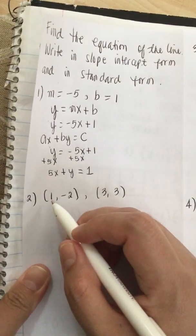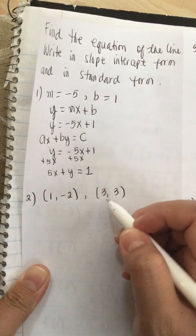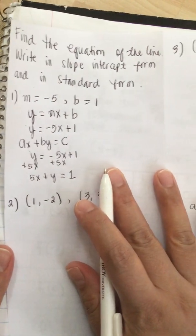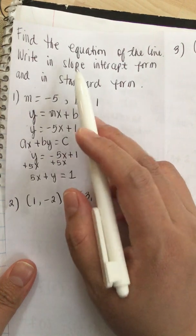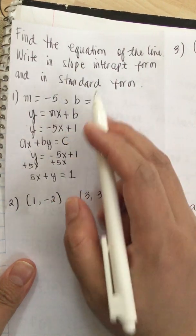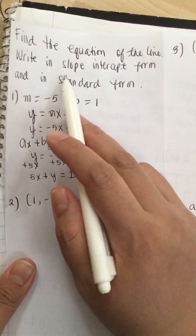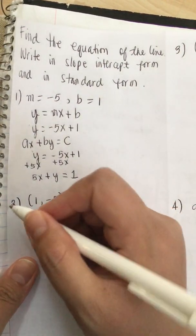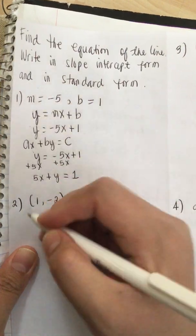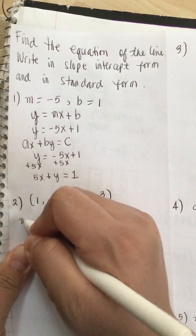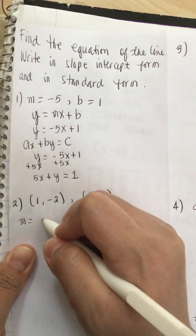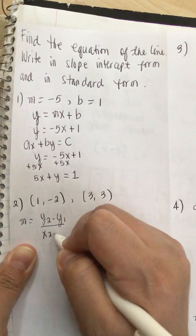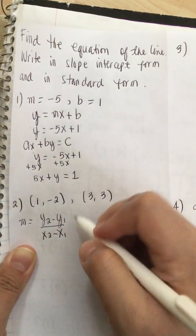Number 2: points (1, -2) and (3, 3). In this problem they give us two points, so we have to write the equation in slope-intercept form and in standard form. First, let's find the slope. The formula for slope is m equals y2 minus y1 over x2 minus x1.